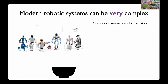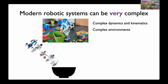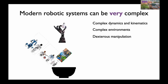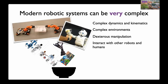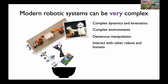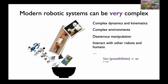Modern robotic systems usually have complex dynamics and kinematics. They also need to operate in complex environments ranging from human-populated environments to industries to extreme environments such as nuclear power plants and offshore facilities. They must perform dexterous manipulation, especially in environments made for and by humans. And because they might interact with humans, we need to account for that, as well as interaction with other kinds of robots.